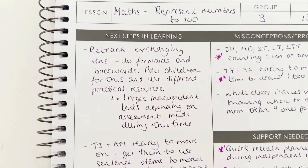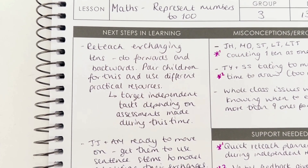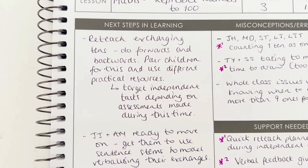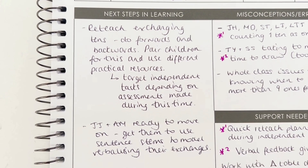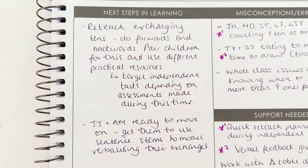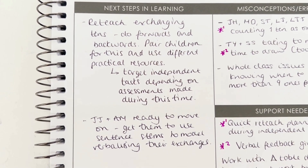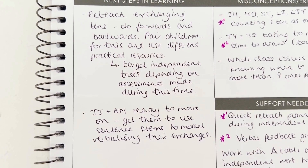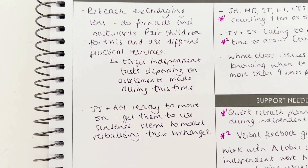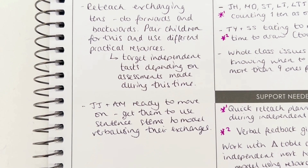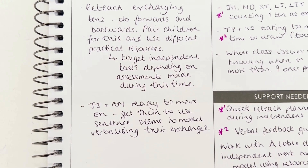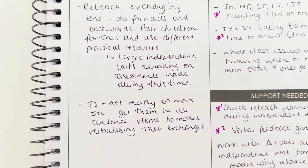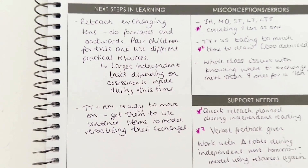So for this Year 3 place value lesson, I am planning to reteach some exchanging because it was a whole class misconception. I've then identified some particular students who don't necessarily need this recap and are ready for the next step, and can be given some independent work while I'm going through the reteach.